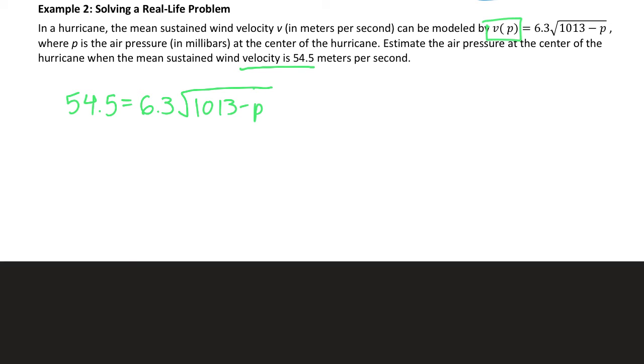So the way I'd set up this equation, 54.5 equals 6.3 times the square root of 1013 minus P. So I'm substituting in for velocity, I am solving for P pressure, and that unit, the units we're going to find it in, is called millibars. That's the way they measure, or units they measure pressure and air pressure. So, just like our other equations, except it's got decimals mainly. So to solve this, isolate the radical, divide both sides by 6.3.